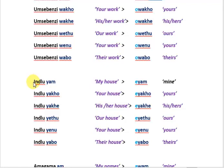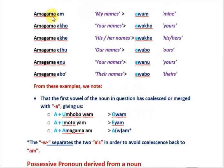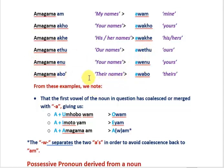We'll talk more about that towards the end of the video. 'Amagama am' — my names; 'awam' is mine. 'Amagama ako' — your names; 'awako' is yours. 'Amagama ethu' — our names; 'awethu' is ours. 'Amagama abo' — their names; 'awabo' is theirs. Here 'a' is the highlighted vowel and also the initial vowel.